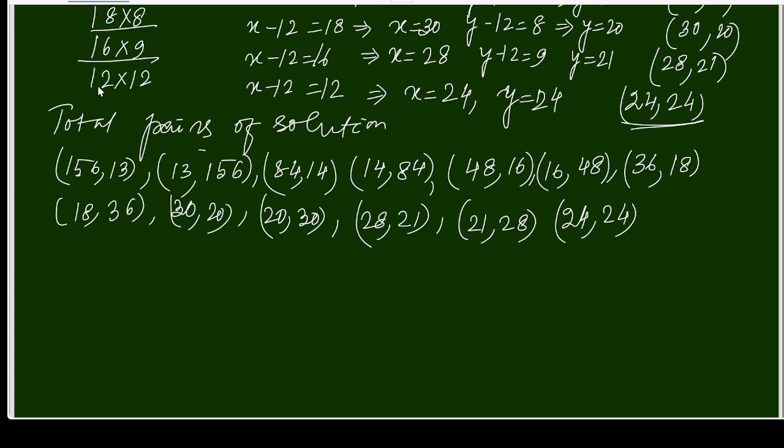So it should be 13 pairs. 1, 2, 3, 4, 5, 6, 7, 8, 9, 10, 11, 12, 13. So 13 pairs of solutions are possible.